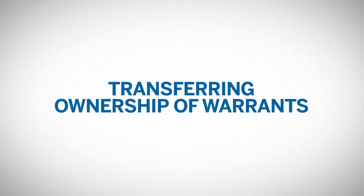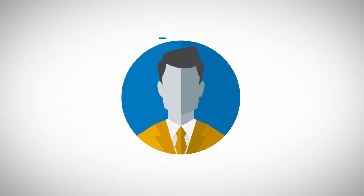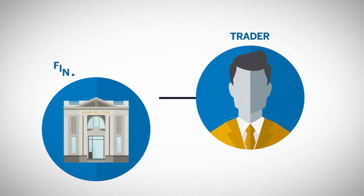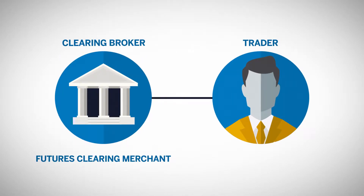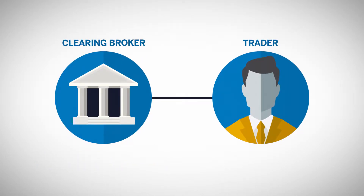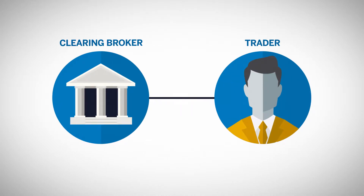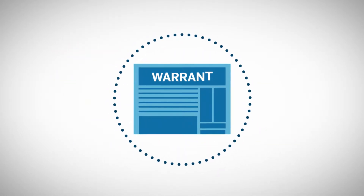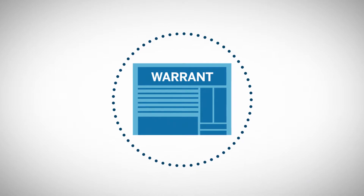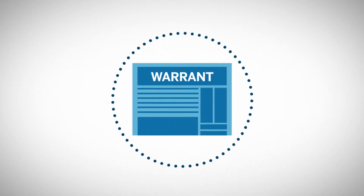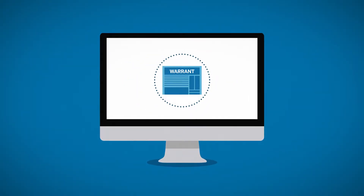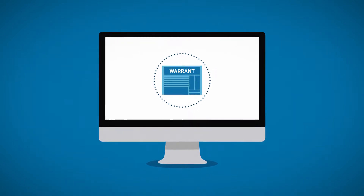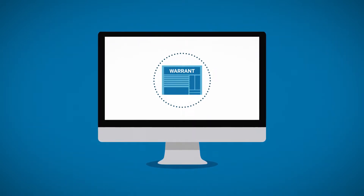Transferring ownership of warrants: warrants may be pledged by the trader to the financing bank. If the clearing broker, also known as a futures clearing merchant, is different to the financing bank, they will facilitate this process but not actually transfer ownership of the warrants. Any clearing member engaged in this service would have warrants put in lien status for the duration of the loan. The warrants in lien status cannot be used for any deliveries until the financing bank indicates the lien can be removed.